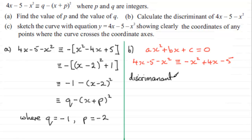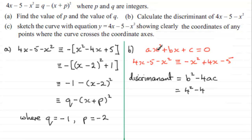The discriminant is the b squared minus 4ac part from the quadratic formula x equals minus b plus or minus the square root of (b squared minus 4ac) all over 2a. Here, b equals 4, a equals minus 1, and c equals minus 5. So the discriminant is 4 squared minus 4 times (minus 1) times (minus 5), which gives 16 minus 20, equalling minus 4.